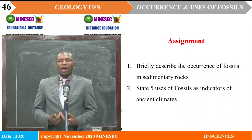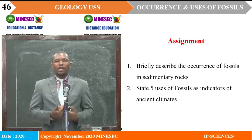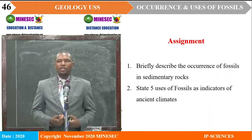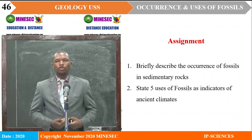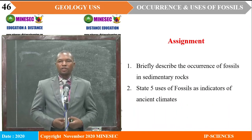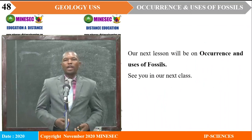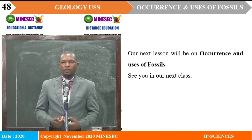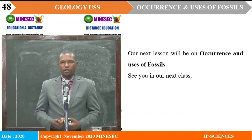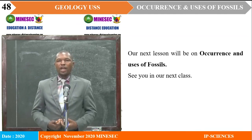Our assignment to do at home: go through the lesson and answer these questions. Question 1: Briefly describe the occurrence of fossils in sedimentary rocks. Question 2: State five uses of fossils as indicators of ancient climates. We have come to the end of our lesson. Our next lesson will continue on occurrence and uses of fossils, focusing on the other uses of fossils. See you in our next class.